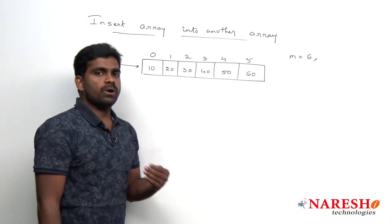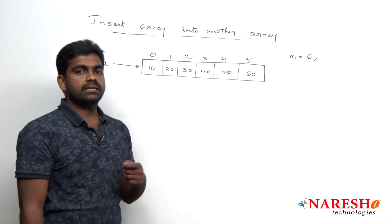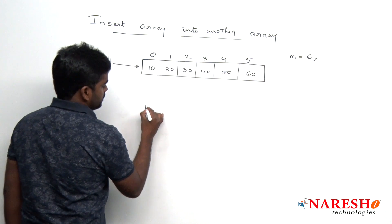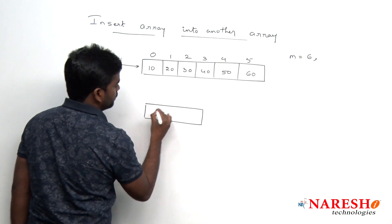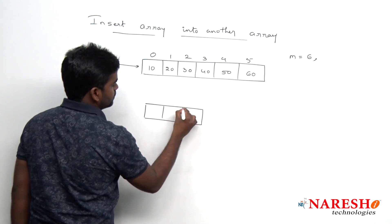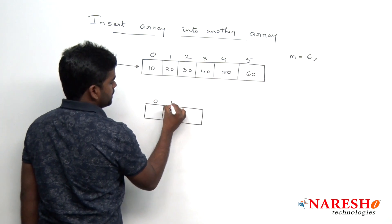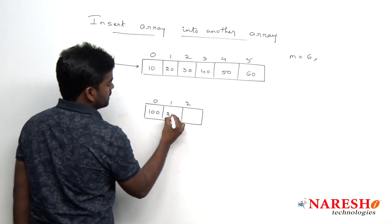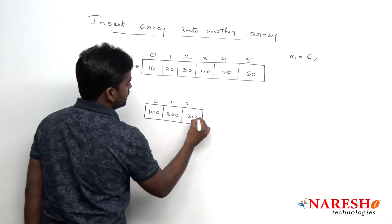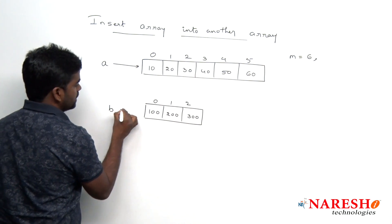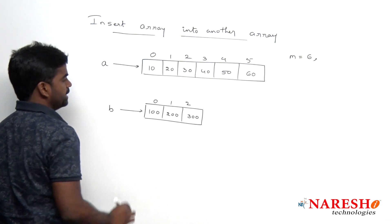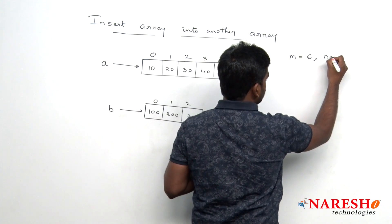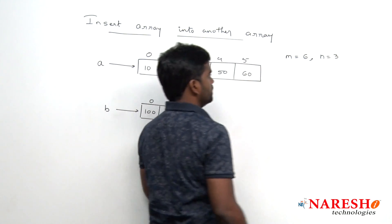Next, we are taking one more array because we are inserting a complete array instead of a single element. We consider another array of any size — for example size 3 — with elements 100, 200 and 300. This second array is pointed to by 'b', and its size is stored in variable n, so n is equal to 3.